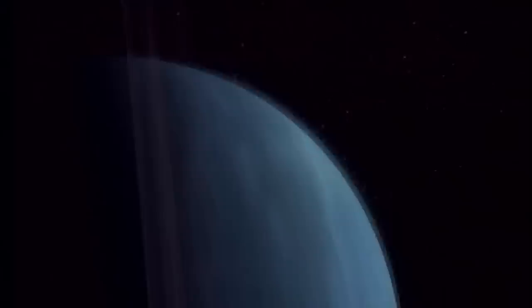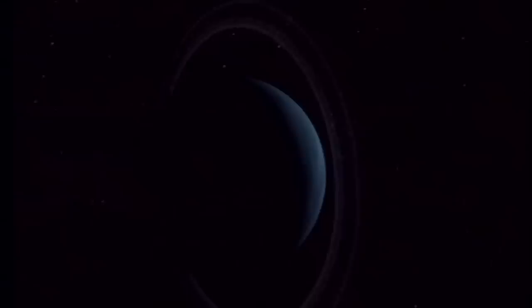Sur Uranus, le jour dure presque 18 heures et la planète met 84 ans pour parcourir son orbite autour du Soleil.